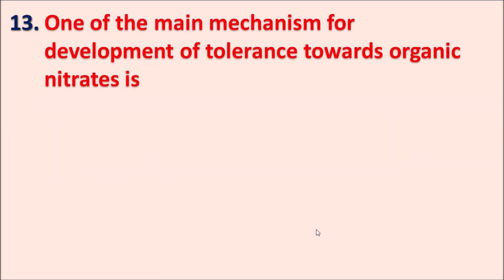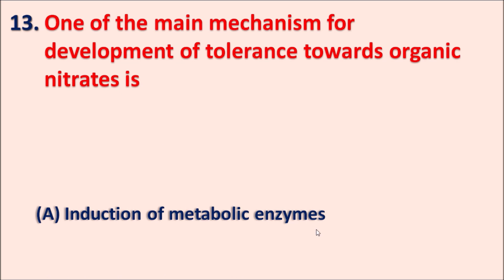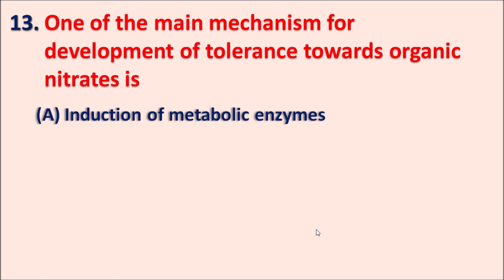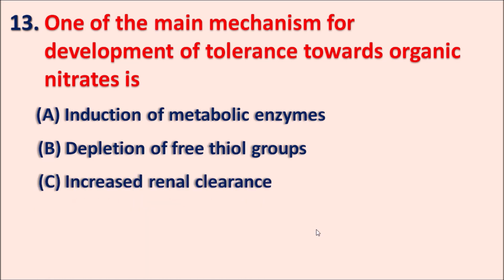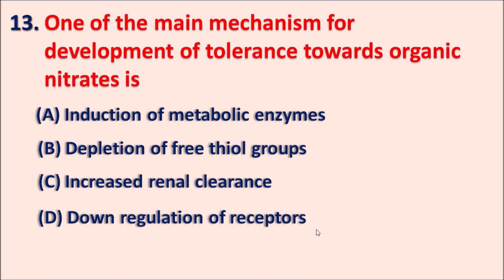Question 13: One of the main mechanisms for the development of tolerance towards organic nitrates is: A. Induction of metabolic enzymes, B. Depletion of free thiol groups, C. Increased renal clearance, D. Down-regulation of receptors. When a drug is used repeatedly over a longer period it may develop tolerance — a decreased pharmacological response. Tolerance can develop through variable mechanisms: induction of metabolic enzymes increases drug metabolism; increased renal clearance reduces pharmacological action; and receptor down-regulation decreases receptor number.